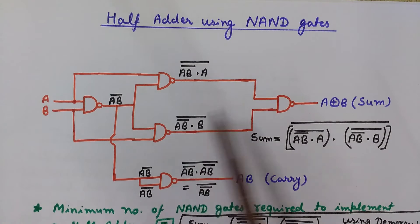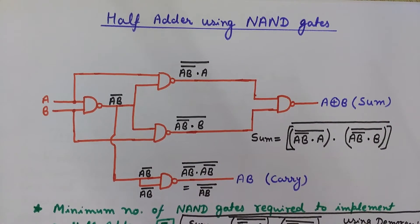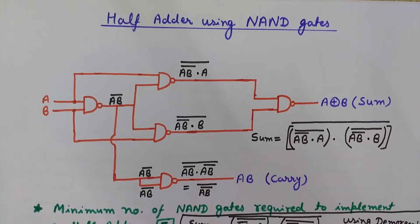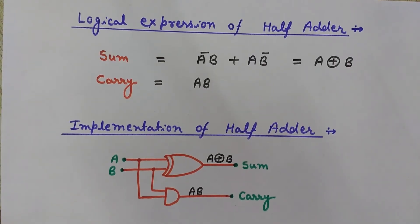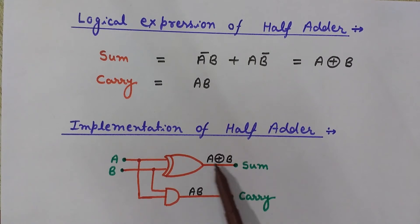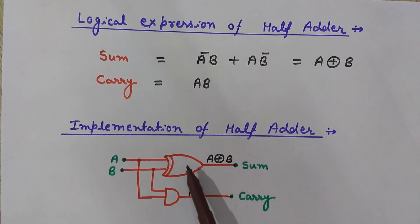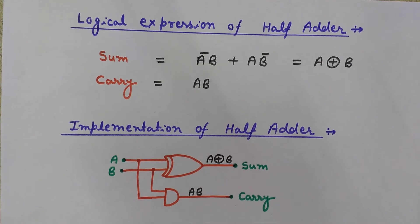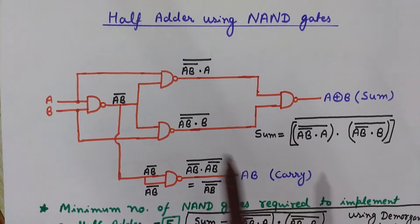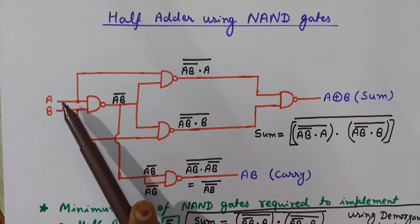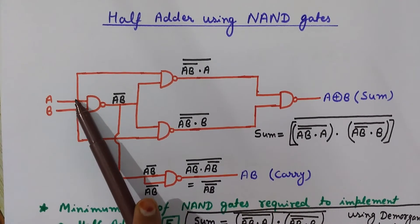We have used five NAND gates here — one, two, three, four, and five. In the previous video we saw the half adder using XOR and AND gate, where the two inputs are A and B, A XOR B is the sum, and A·B is the carry. Now we are not using XOR and AND gates; we are only using NAND gates.